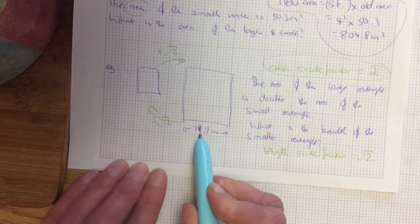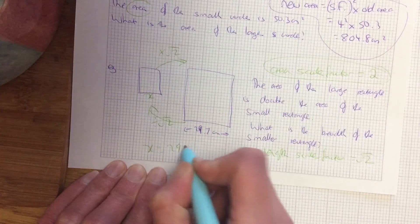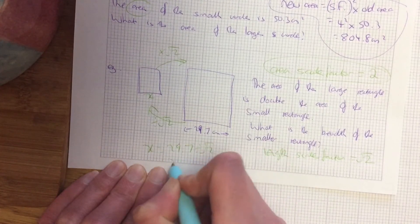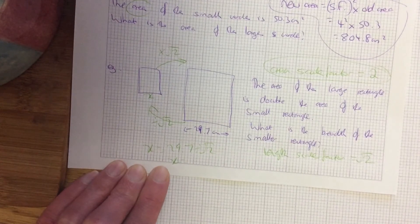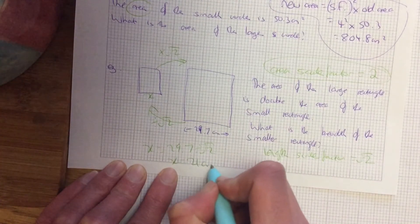Now the question wants me to work out the small, I'll just call that x. So x equals 29.7 divided by root 2. So that is a very tricky question there, giving you 21 centimeters.